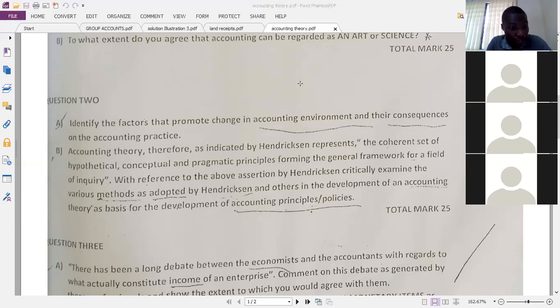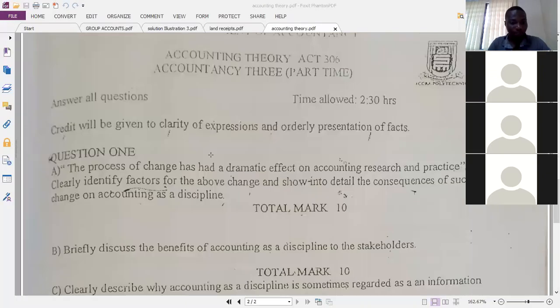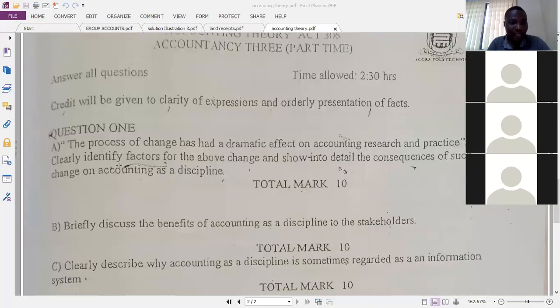You see question two here. Identify the factors that promote change in accounting environment and their consequences. The answer you provide here is the same answer here. It's the same answer you are providing here. Clearly identify the factors that promote change. Clearly identify factors for the above change and showing to this is the concept. It's the same answer.